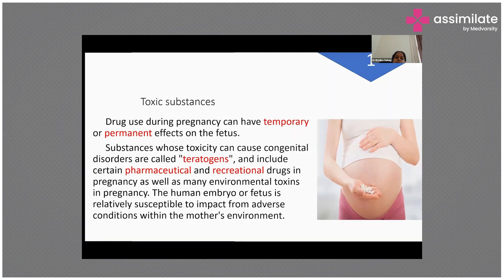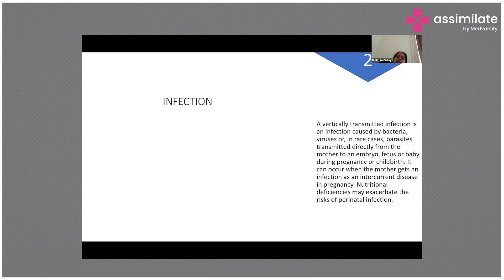Coming to infection: a vertically transmitted infection is caused by bacteria, viruses, or rarely parasites, transmitted directly from mother to embryo, fetus, or baby during pregnancy or childbirth. It can occur when the mother acquires an intercurrent infection during pregnancy. Nutritional deficiencies may exacerbate the risk of perinatal infection.